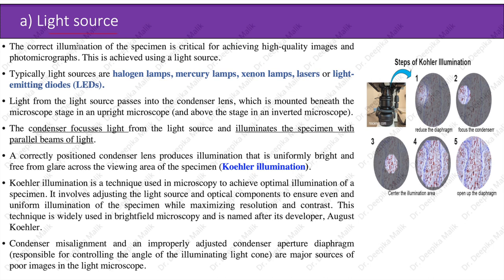Correct illumination of the specimen is critical for achieving high-quality images. Light sources typically used include halogen lamps, mercury lamps, xenon lamps, lasers, or laser-emitting diodes. Light from the source passes into the condenser lens, which is mounted beneath the stage in an upright microscope and above the stage in an inverted microscope. The condenser focuses light and illuminates the specimen with parallel beams. A correctly positioned condenser lens produces uniform illumination free from glare — also termed Köhler illumination.